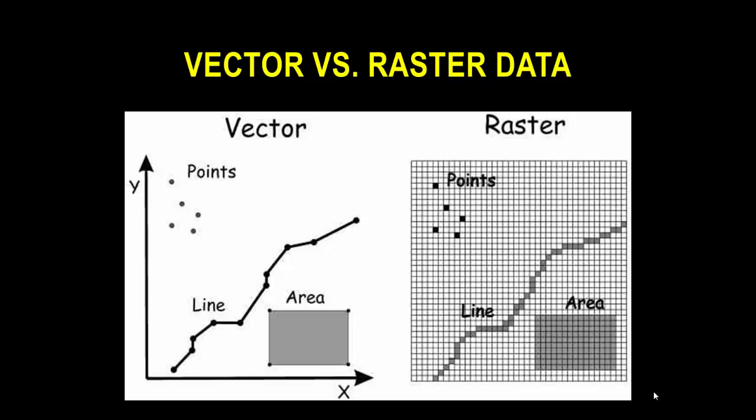On the left side you can see the vector data. A point represents a single point, and lines are interconnected points. Connecting four points forms a rectangular area — that is vector data. On the right side you can see the raster data, where points are represented by single cells, lines are interconnected by many cells, and areas also contain many cells.